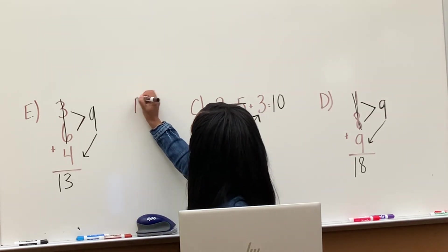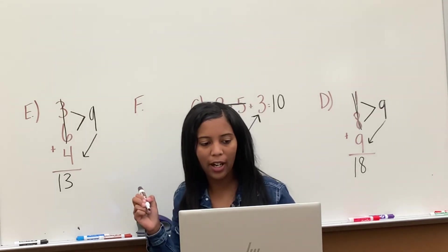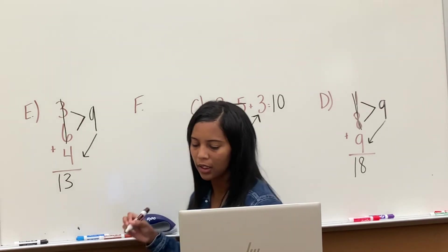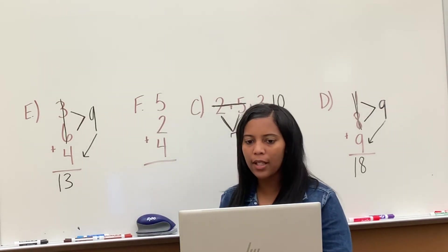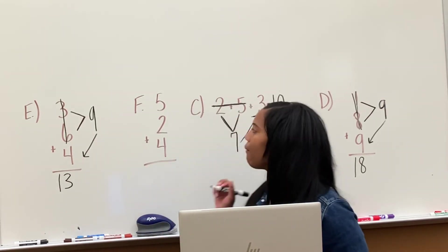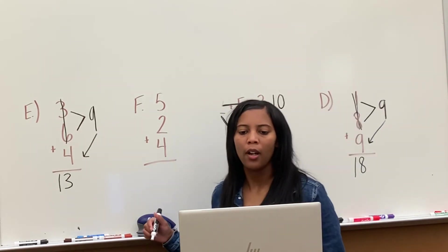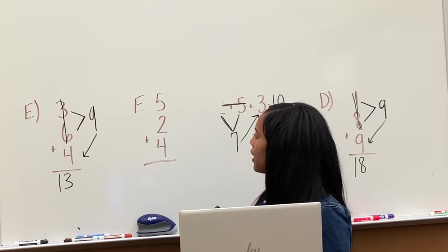So let's do F. Would you like to try F on your own? You try that one on your own and then we'll talk about it. So try F. Let's go ahead and add it up with anyone. So the first thing, who can tell me the first thing I needed to do to add 5 plus 2 plus 4? First thing, Josiah, what do I need to do?